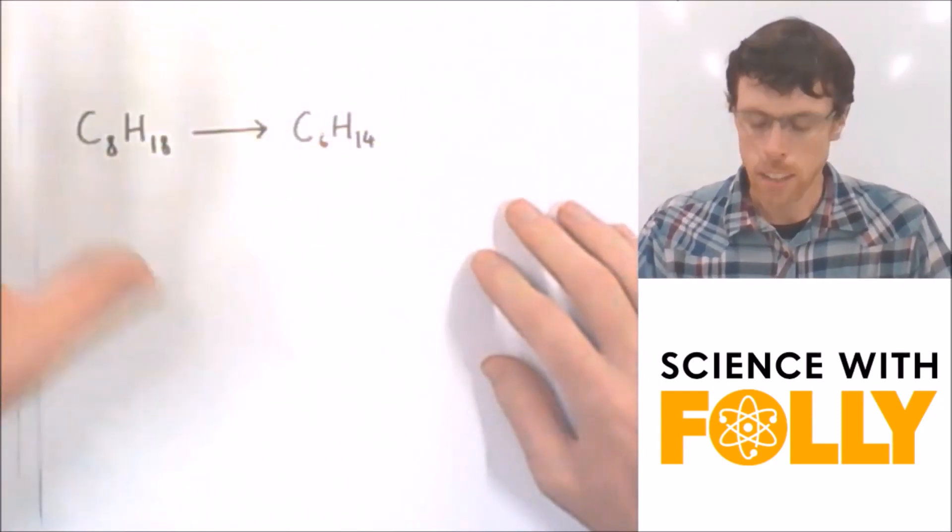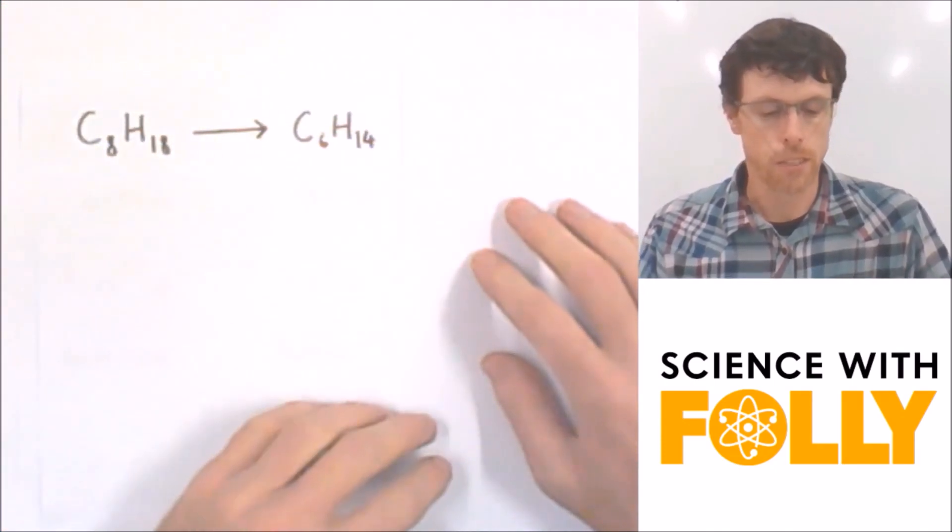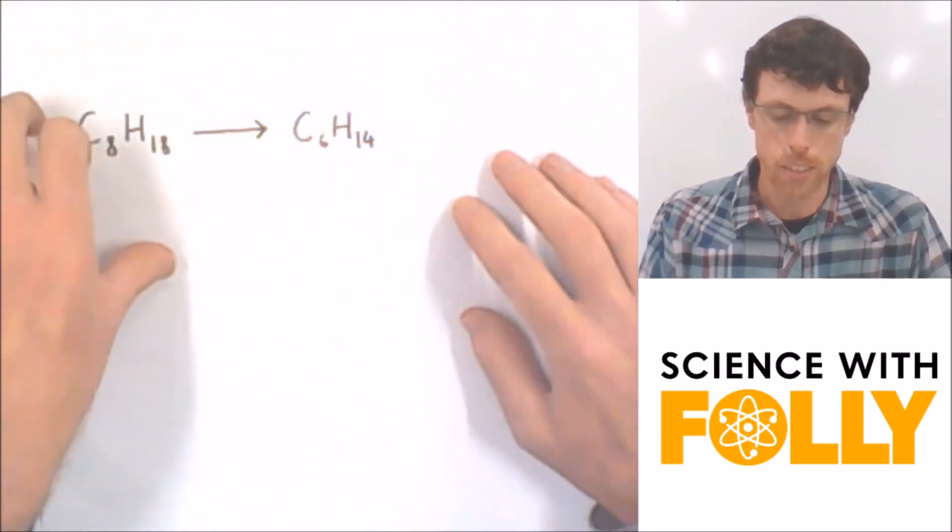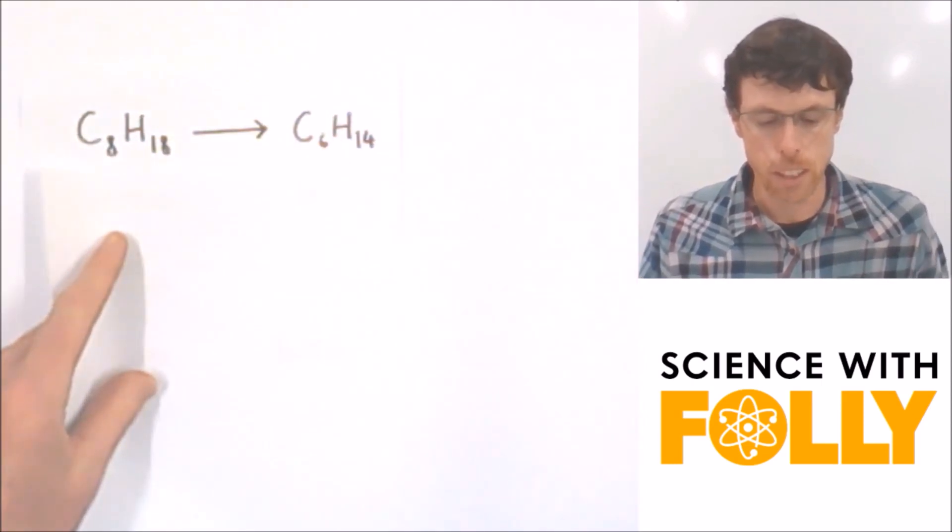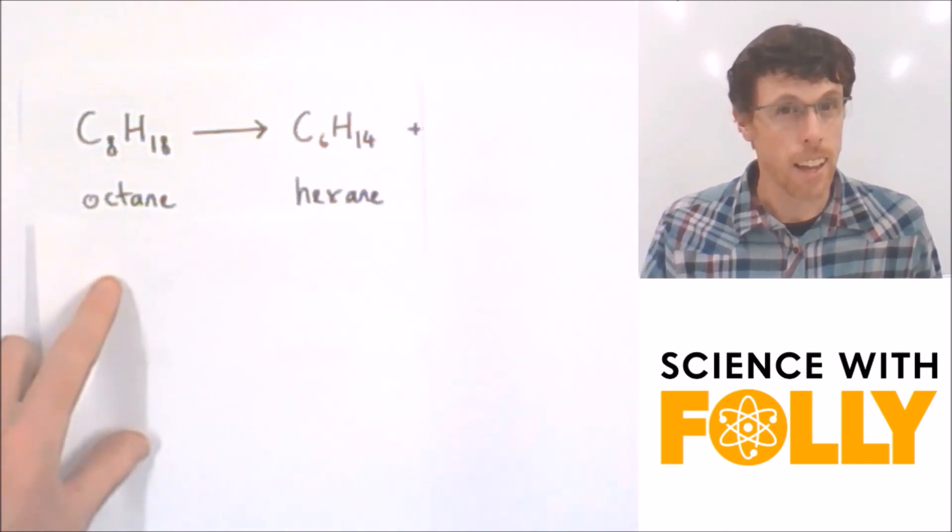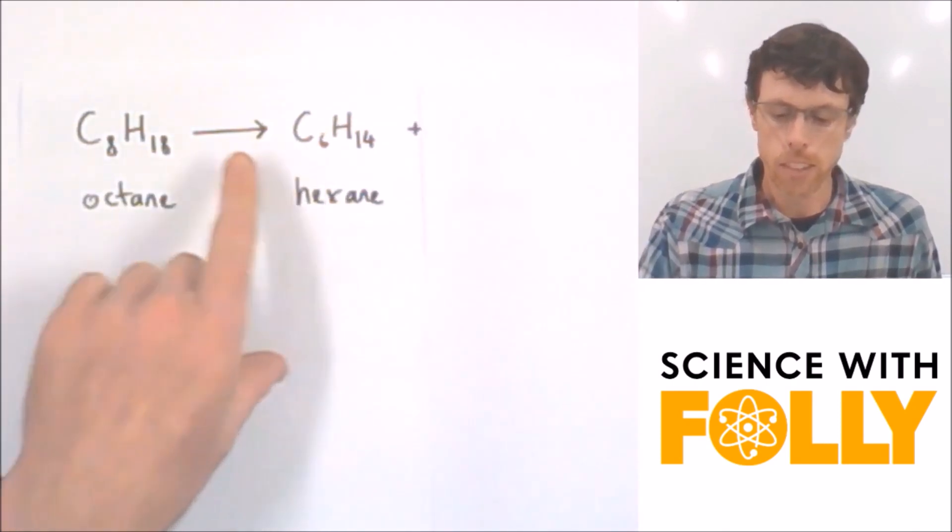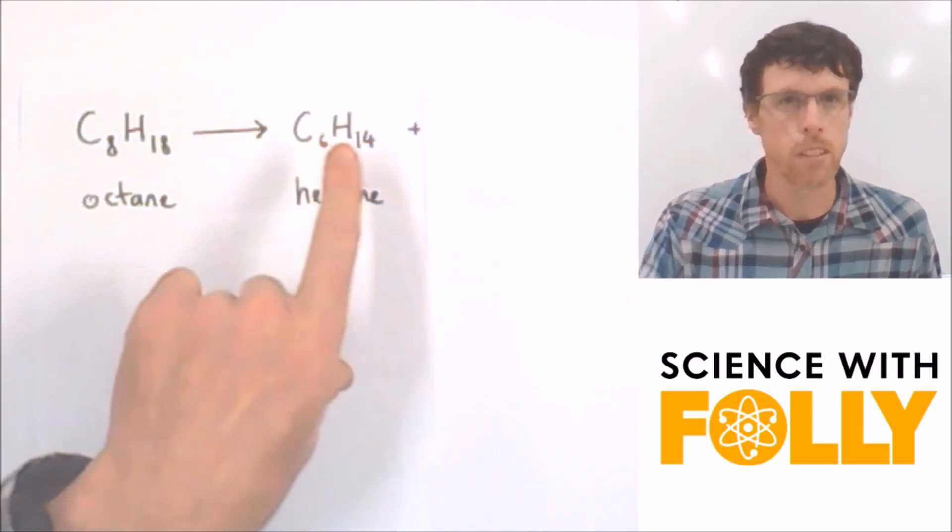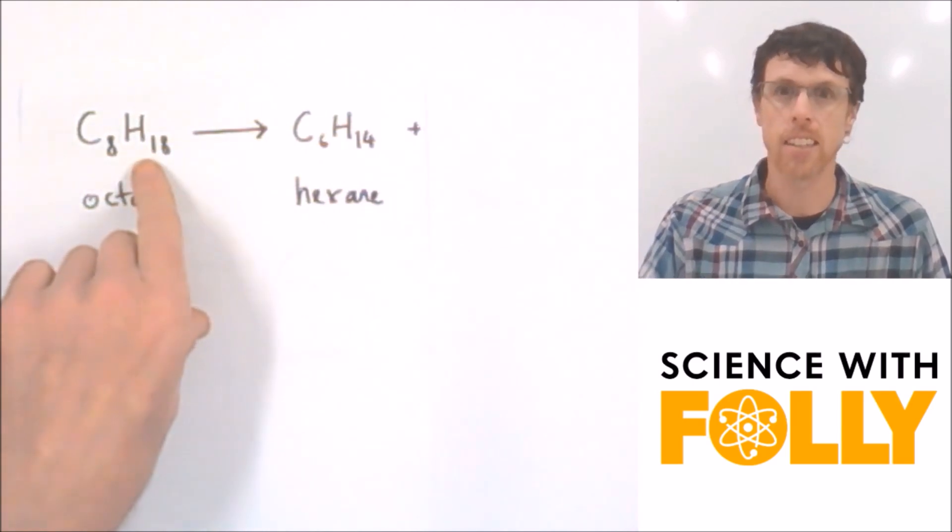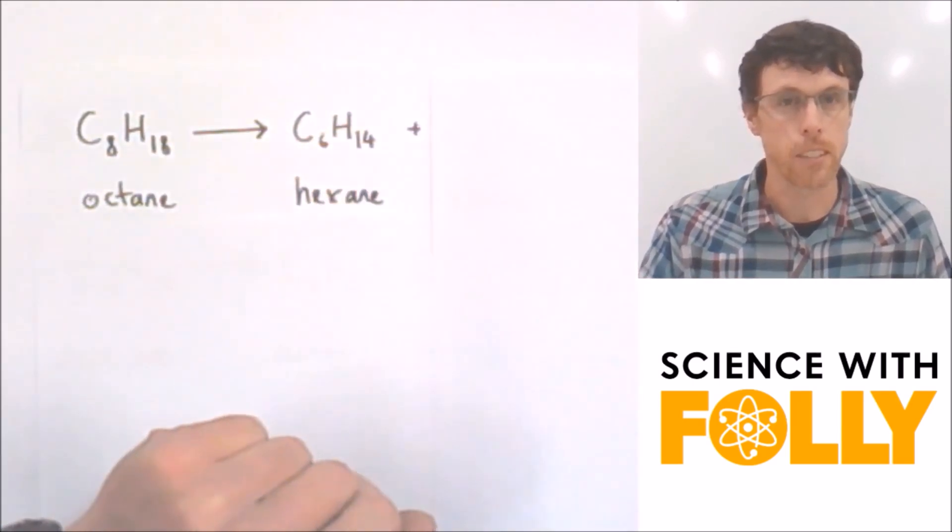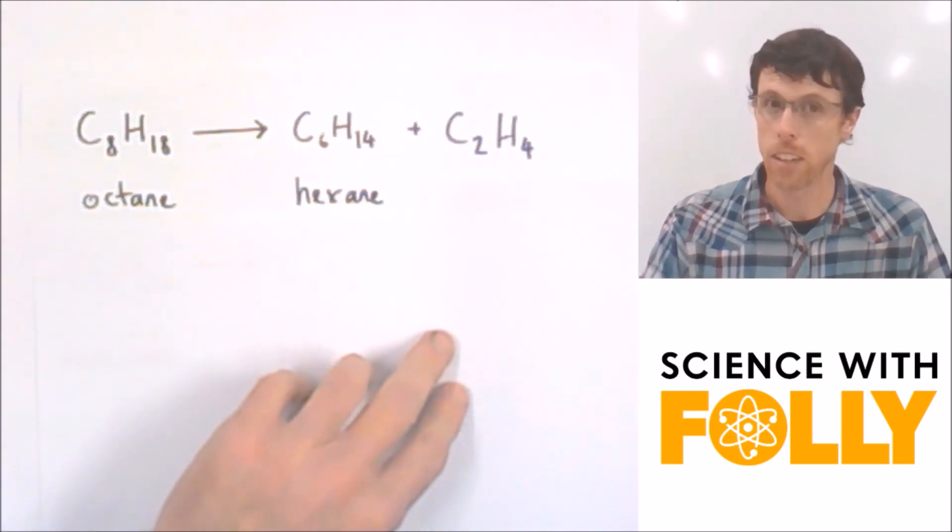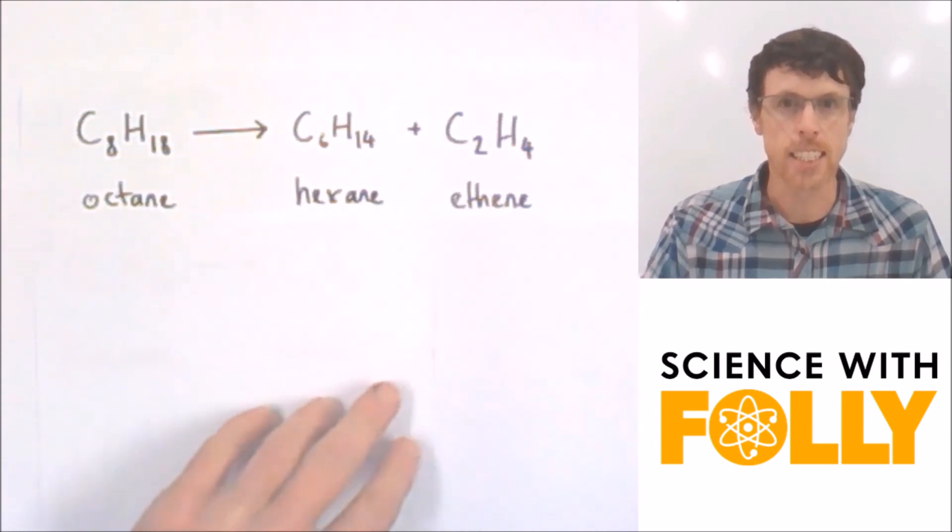So let's have a look at cracking using just the molecular formula. So here I've got C8H18 and it gives us C6H14 plus something else. What's the name of these two? Well, octane and hexane. And obviously I've got eight carbons here, six here, which means I've got to be left over with two carbons. I've got 18 hydrogens, 14 hydrogens, which means I'm left with four hydrogens. So I get C2H4. What's the name of it? That's right. Ethene.